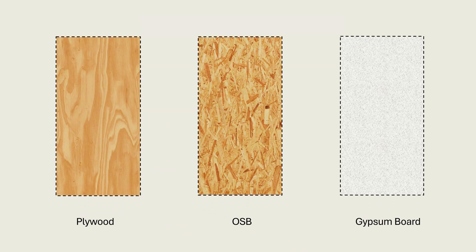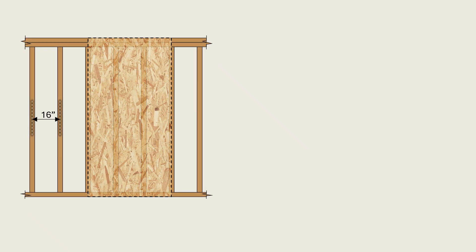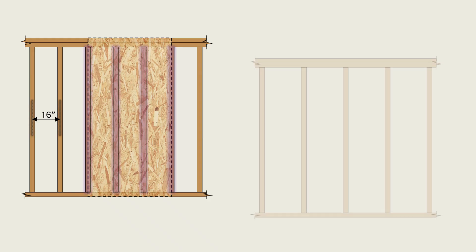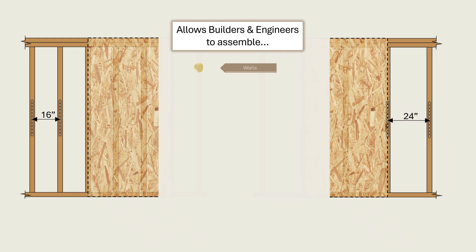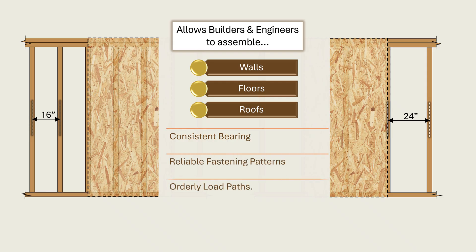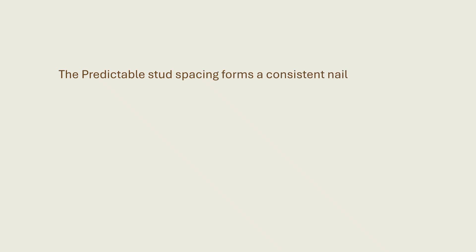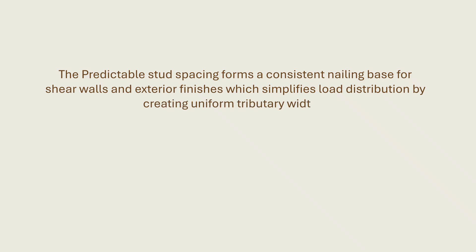Most engineered panels — whether plywood, OSB, or gypsum board — are manufactured in 4-foot-wide sheets, which fits perfectly over framing spaced at these intervals. If studs are spaced at 16 inches on center, a single panel will span across 4 studs, while the same panel will perfectly span across 3 studs when spaced at 24 inches on center. The result is an efficient system in which framing members and sheathing work in concert, allowing builders and engineers to assemble walls, floors, and roofs with consistent bearing, reliable fastening patterns, and orderly load paths. The predictable stud spacing forms a consistent nailing base for shear walls and exterior finishes, simplifying load distribution by creating uniform tributary widths.